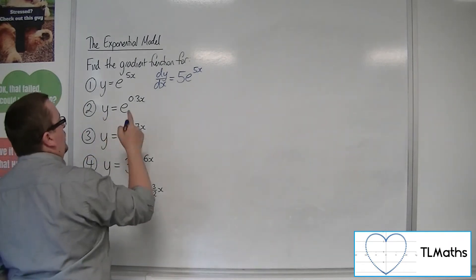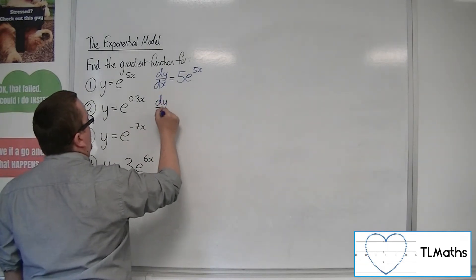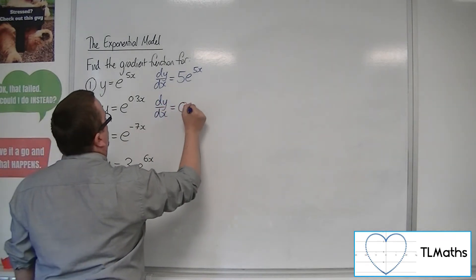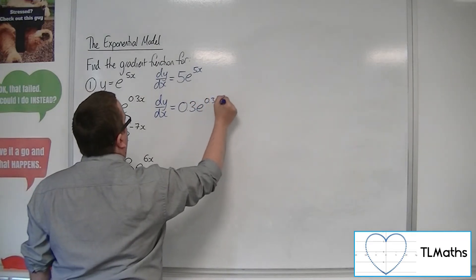Number 2, y equals e to the 0.3x, so dy by dx, the gradient function, will be 0.3e to the 0.3x.